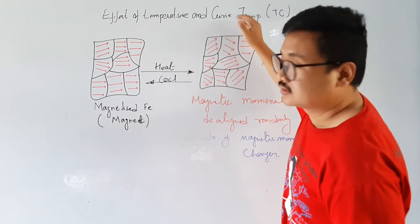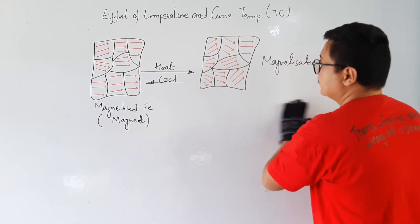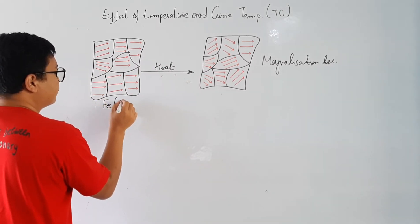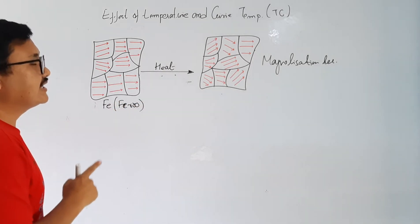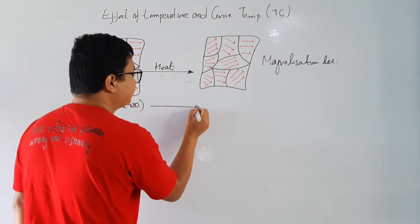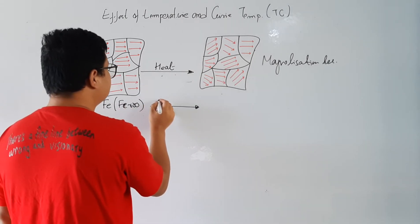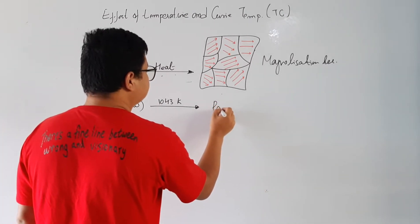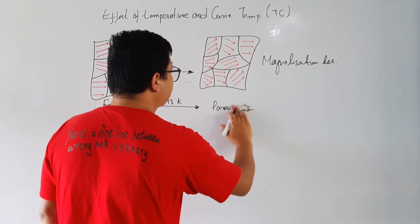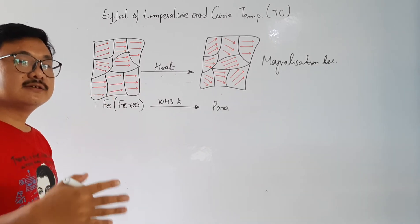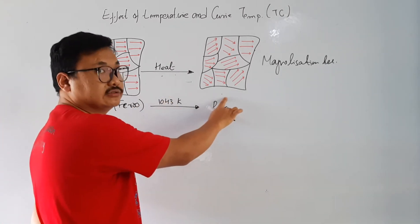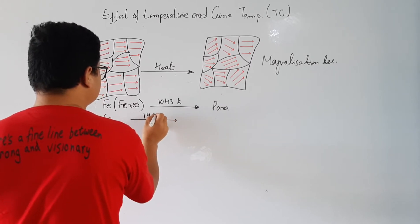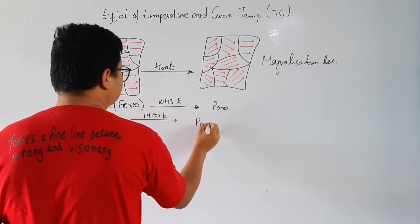Now let me go to the Curie temperature. Let us consider iron, which is ferromagnetic. If we heat iron at 1043 Kelvin, it will convert into paramagnetic. Another example is cobalt, which is also ferromagnetic — heating it to 1400 Kelvin will make it paramagnetic again. And for nickel, the temperature is 627 Kelvin, at which it also becomes paramagnetic.